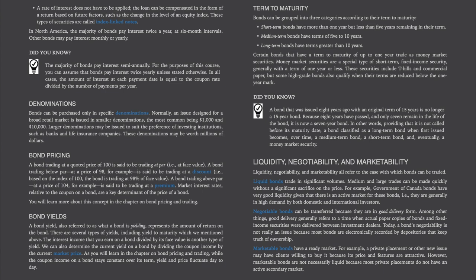Denominations: bonds can be purchased only in specific denominations. Normally, an issue designed for a broad retail market is issued in smaller denominations, the most common being $1,000 and $10,000. Larger denominations may be issued to suit the preference of investing institutions such as banks and life insurance companies, and these denominations may be worth millions of dollars.